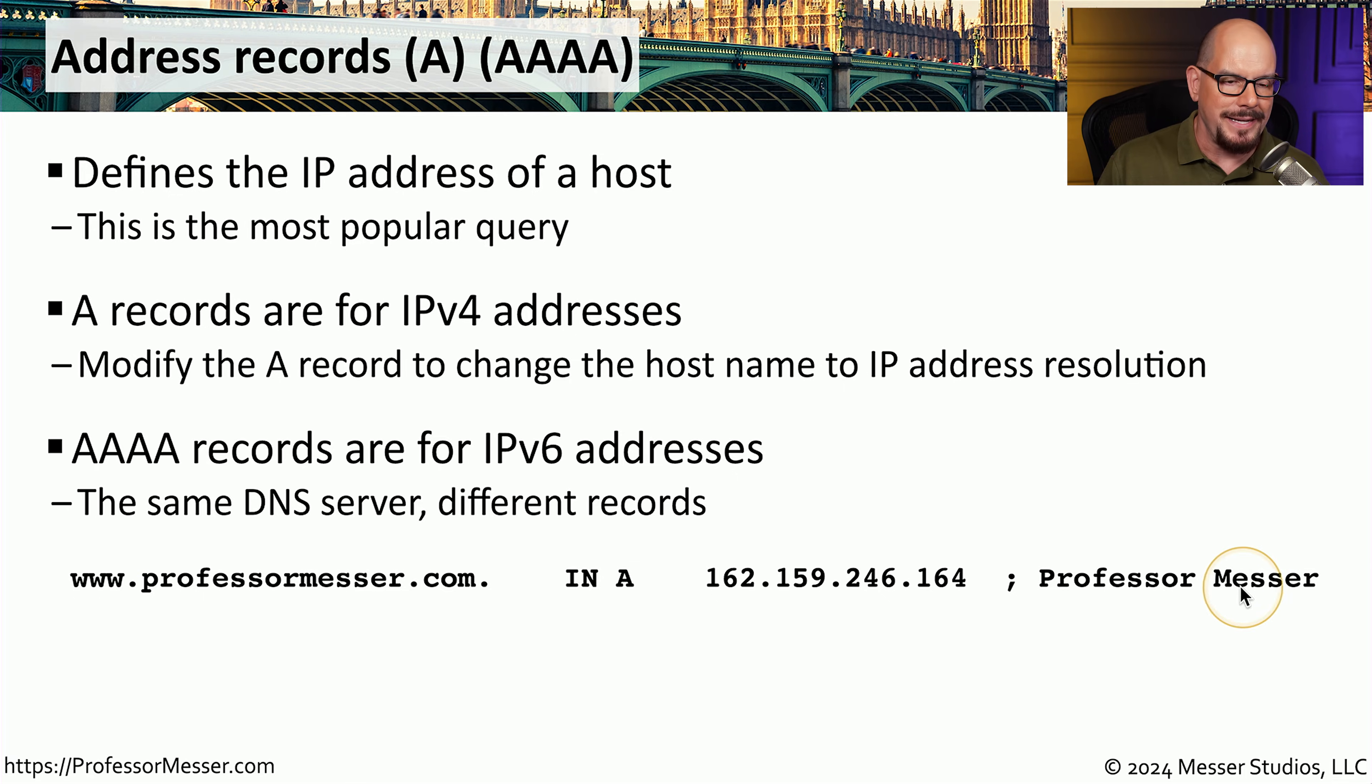This is an A record from my DNS server. You can see the name on this record is www.professormesser.com. This is an internet record. It has an A, which is referring to this address record, and then the IP address of this device, 162.159.246.164. That is the information contained within my DNS server, and if somebody queries that server for www.professormesser.com, that DNS server will return the IP address associated with that A record.